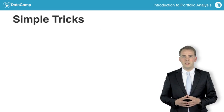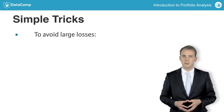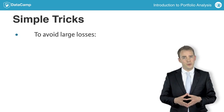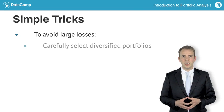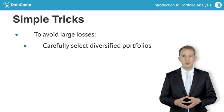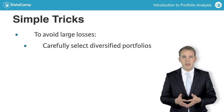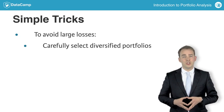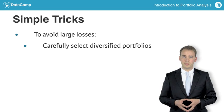There are two simple tricks to reduce the risk of suffering large losses. The first one is to seek portfolio risk diversification. This means that one should avoid investing in one single asset, but instead invest in many different assets. Such a combination of investments is called a portfolio.